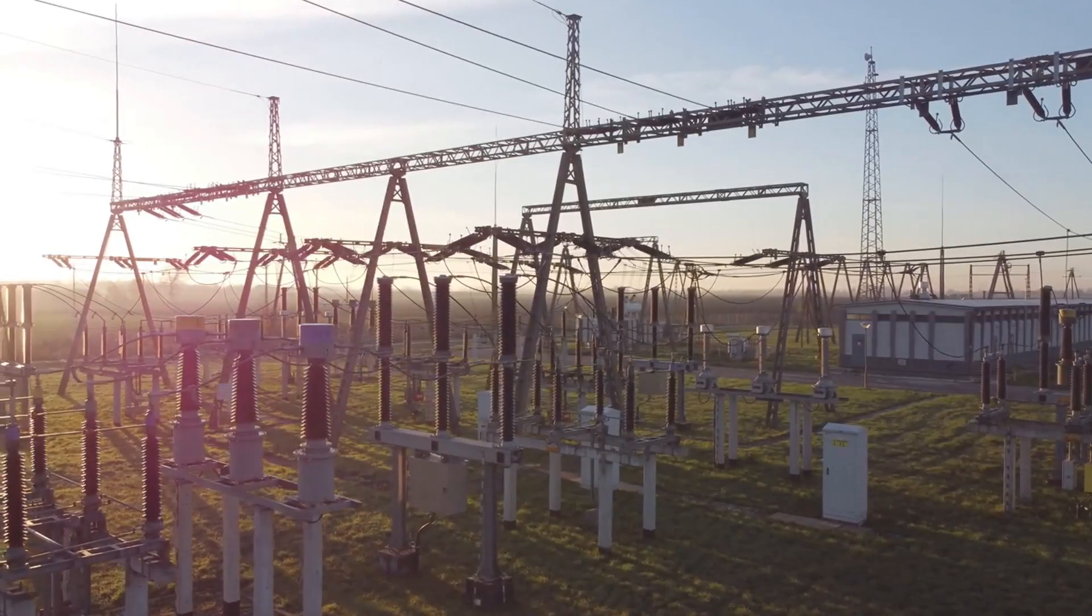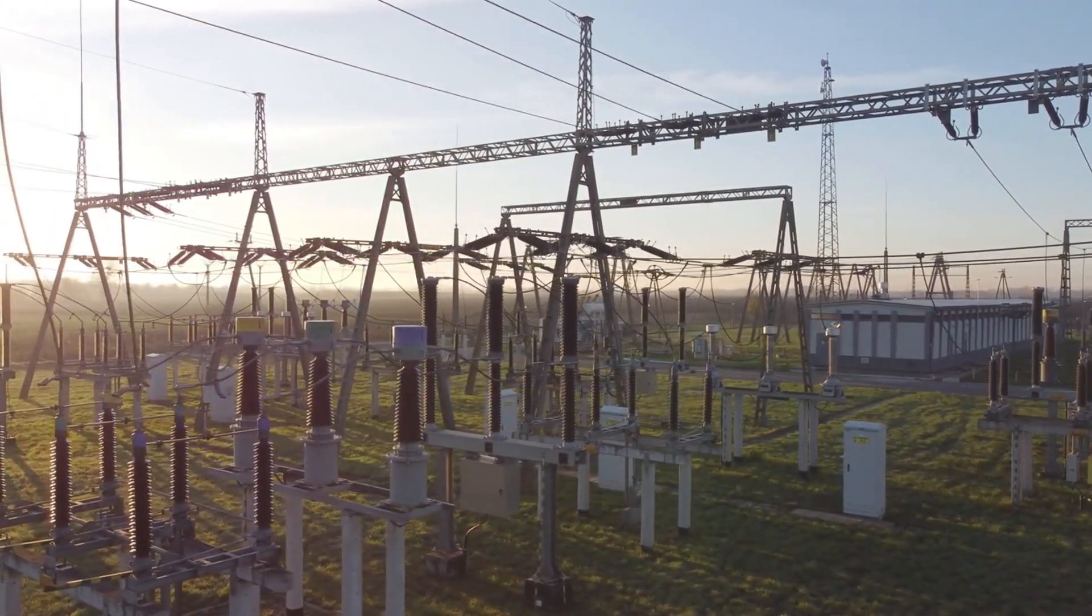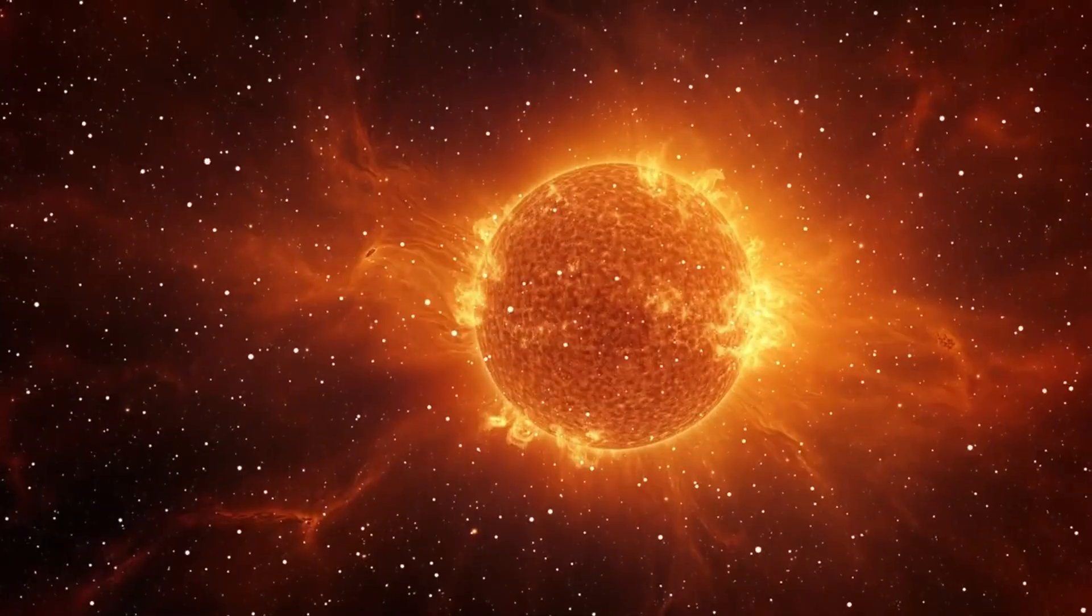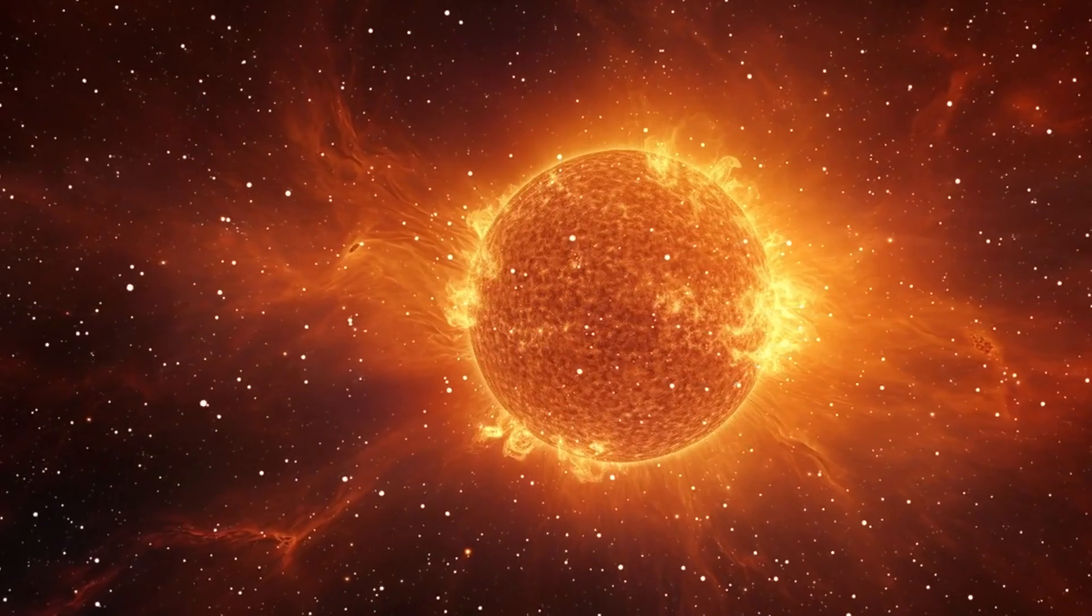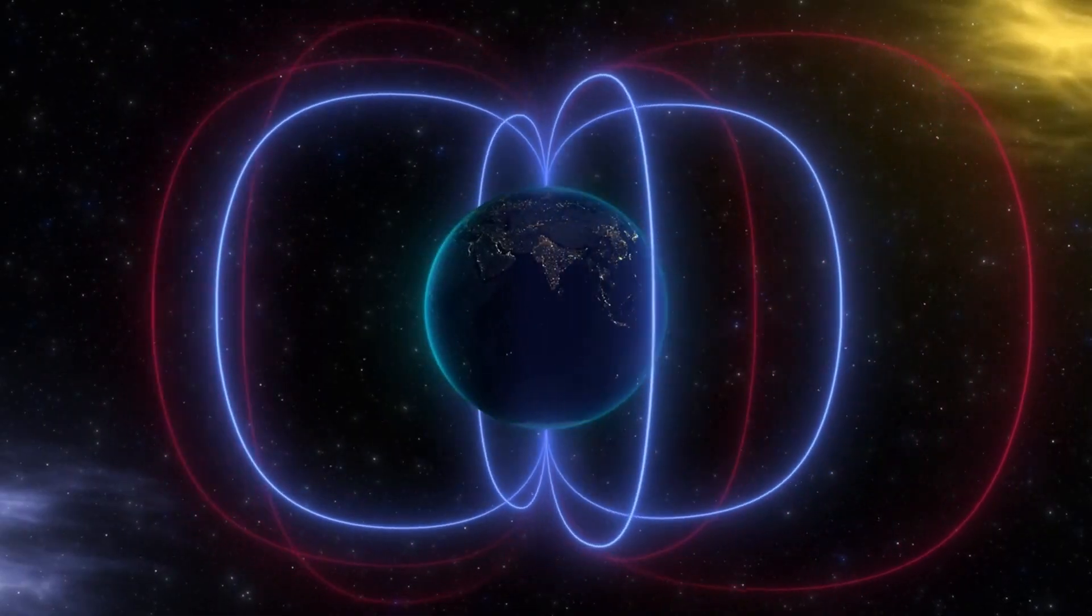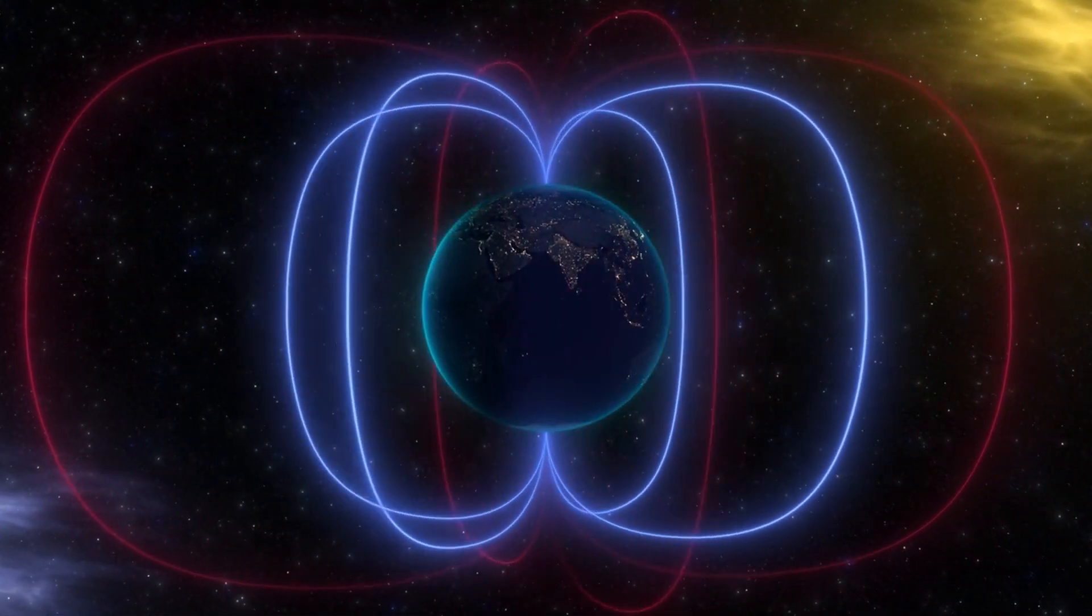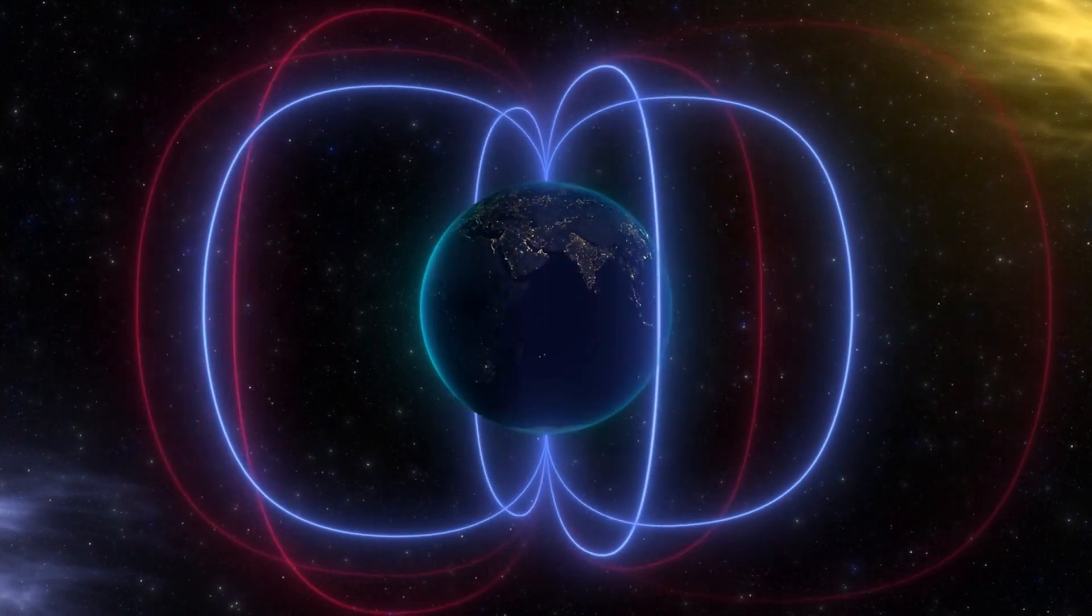The magnetic field doesn't just protect living organisms, it also safeguards our technology. Satellites, power grids, and other electronic systems can be severely damaged by solar storms. The magnetic field helps to deflect these harmful particles, reducing the risk of technological disruptions.